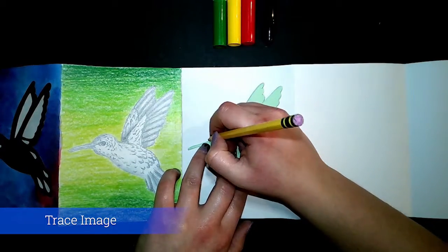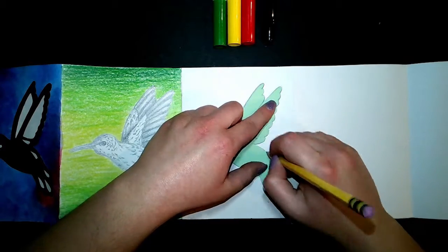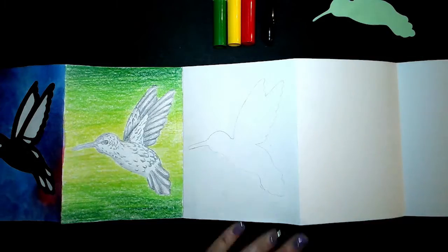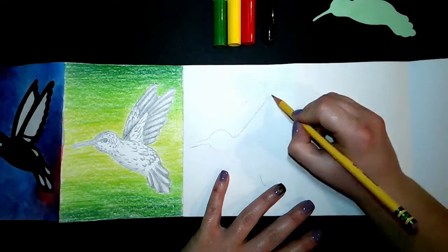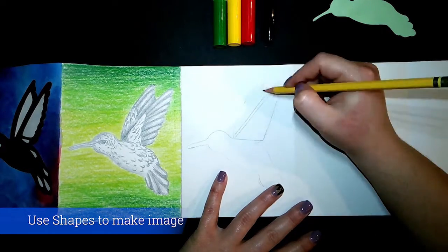Open up your book to the fourth panel and then place your image and trace it. The image I traced is only to help me get the shapes in the right spot.